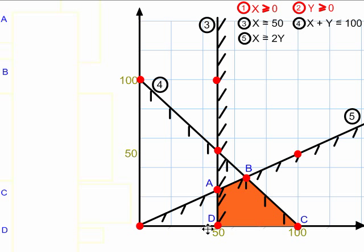In this example, my non-zero constraints are up here in red, and the rest of the constraints are here in black. This is my polygon, and it has four vertices, which I have labeled A, B, C, and D.